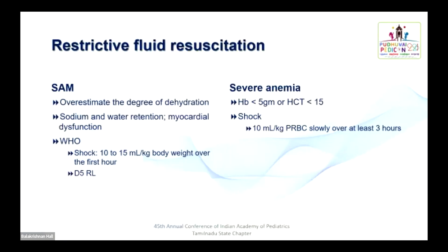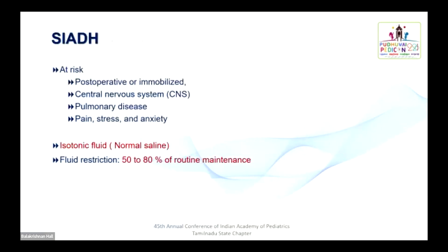Restrictive fluid resuscitation is warranted in severe acute malnutrition, as it overestimates dehydration — these children already have water retention and myocardial dysfunction. WHO recommends 10–15 ml/kg over the first hour; D5-RL is the fluid of choice. For severe anemia presenting with shock (hemoglobin less than 5), give 10 ml/kg of pRBCs slowly over three hours. Critically ill, post-operative, or immobilized children with CNS infections, pulmonary disease, pain, stress, or anxiety are prone to SIADH — in these cases, use isotonic fluid at 50–80% of routine maintenance.